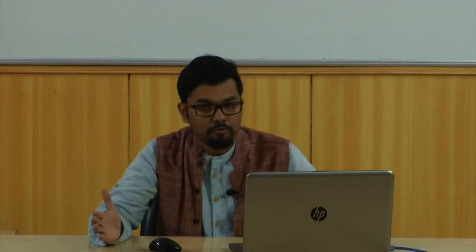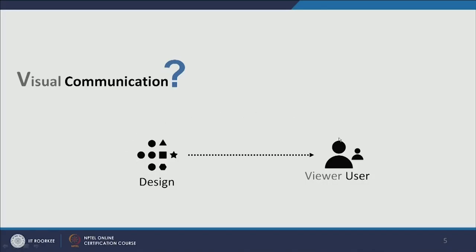There are two things: the design and the viewer. From a designer's perspective, the designer first creates the design and then opens it to the audience, and viewers perceive it. From the user's perspective, users first perceive the design and then try to find its meaning using their own contextual learning and past visual experience. So this has two processes: the process of designing and the process of interpretation.